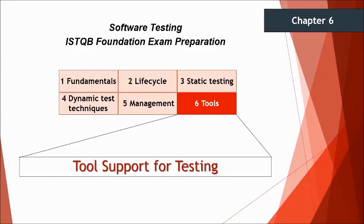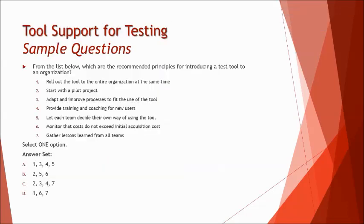We have four questions from this chapter, so you have four marks to be secured out of 40 from this chapter. Nevertheless, anything can contribute to your passing criteria, which is 26 out of 40. The very first question here is from the success factors of using a tool, and the question goes: from the list below, which are the recommended principles for introducing a tool to an organization? This is about the recommendation, not the selection of the tool, so keep an eye on such things.